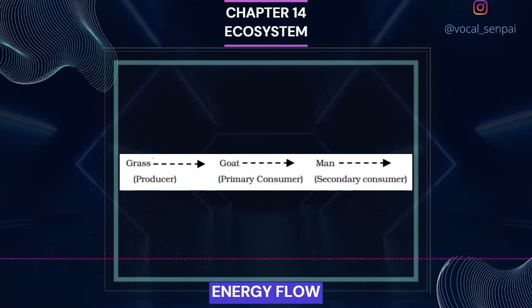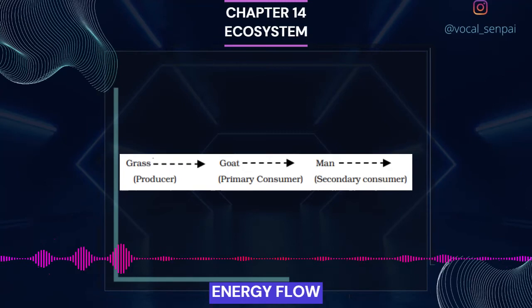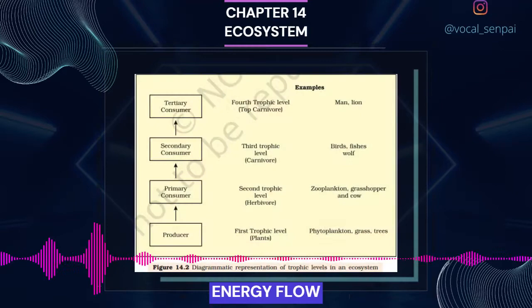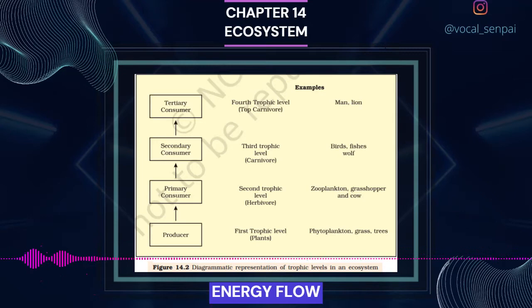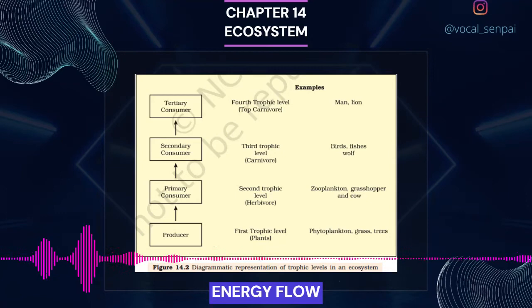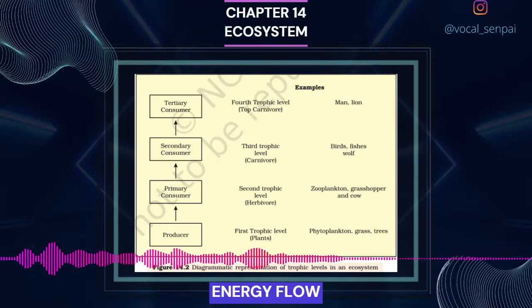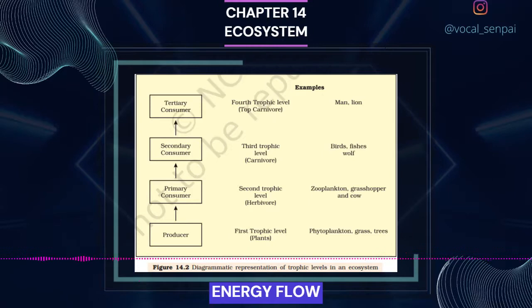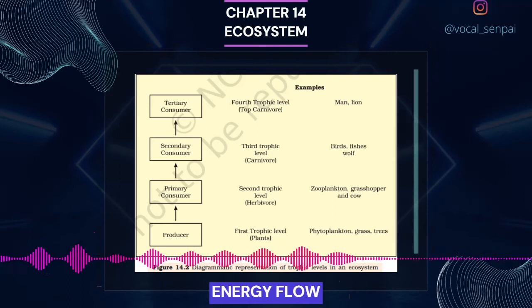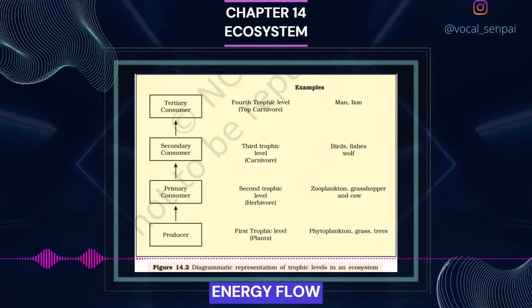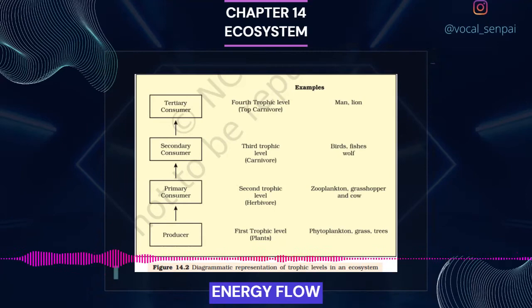A simple grazing food chain (GFC) is depicted below. The detritus food chain (DFC) begins with dead organic matter. It is made up of decomposers which are heterotrophic organisms, mainly fungi and bacteria. They meet their energy and nutrient requirements by degrading dead organic matter or detritus. These are also known as saprotrophs. Decomposers secrete digestive enzymes that break down dead and waste materials into simple inorganic materials which are subsequently absorbed by them. In an aquatic ecosystem, GFC is the major conduit for energy flow. As against this, in a terrestrial ecosystem, a much larger fraction of energy flows through the detritus food chain than through the GFC.